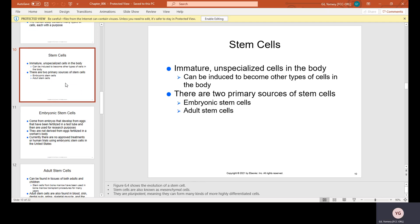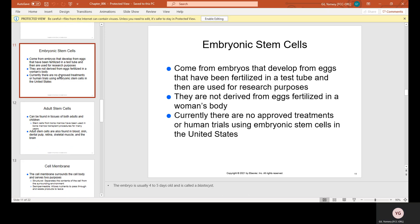Stem cells. Immature, unspecialized cells in the body can be induced to become other types of cells. There are two primary sources of stem cells: embryonic stem cells and adult stem cells. Embryonic stem cells come from embryos that develop from eggs that have been fertilized in a test tube and then are used for research purposes. Currently, there are no approved treatments or human trials using embryonic stem cells in the United States.